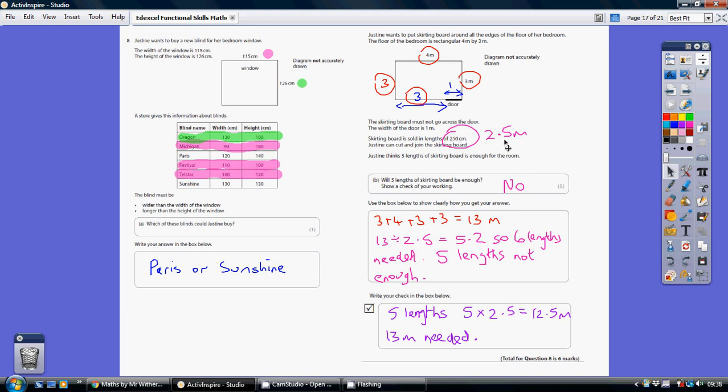I need 13 meters and each length is 2.5 meters. How many lengths do I need? I do 13 divided by 2.5 and I would need 5.2 lengths. Five lengths and a little bit more. So, I would actually need six lengths.